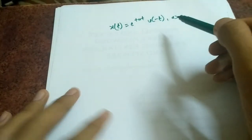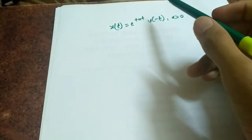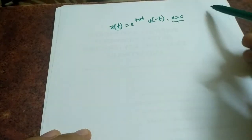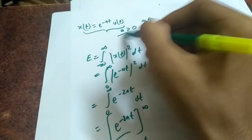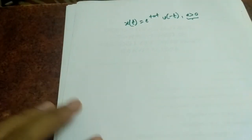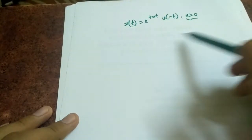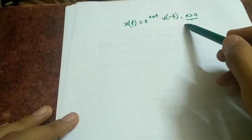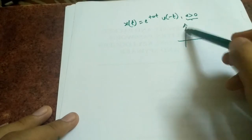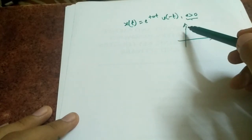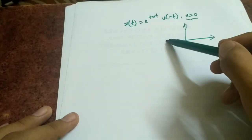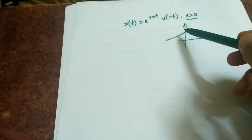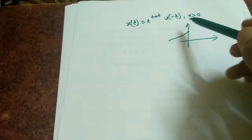This is our next question and we have to find energy for this signal. This is same as the previous one — in the previous one, a was greater than zero. So a is greater than zero here as well. Now let's first check whether the signal is bounded or not before we proceed to calculations. Clearly, e^(at) rises exponentially, but u(-t) restricts the graph to the left side only. From the graph, we can clearly say that it is a bounded signal.